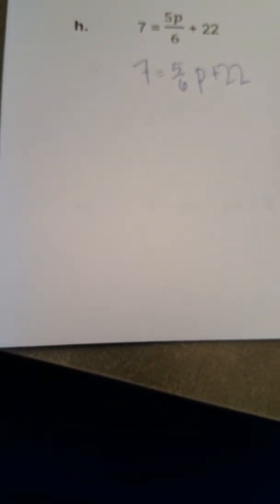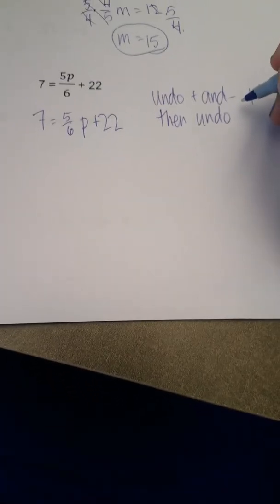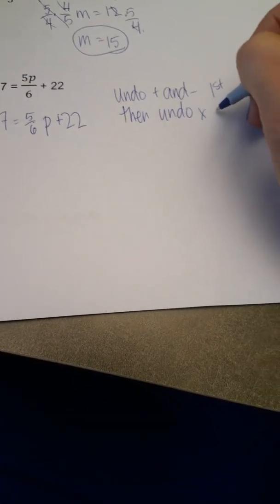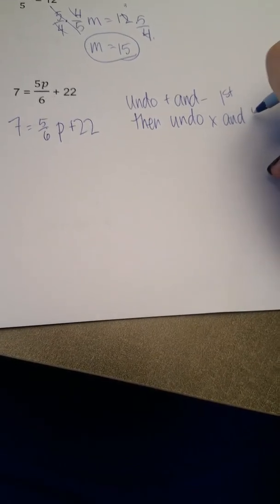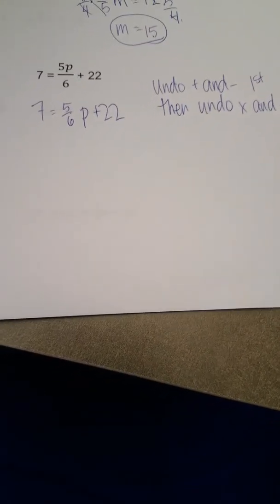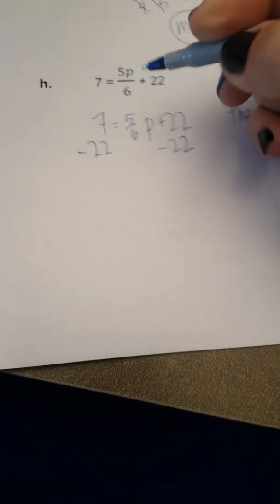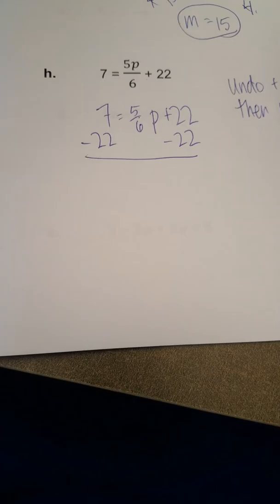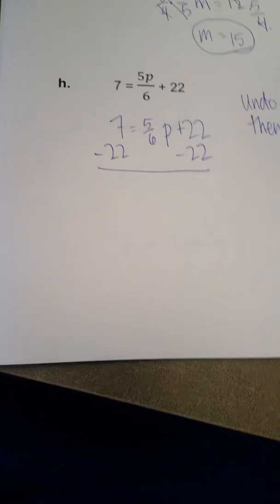Whoops! Then, undo multiplication and division. So I would like to move this 22 to the other side, and the way that I'm going to do that is by subtracting 22 from both sides of the equation. So on the left, 7 minus 22 is negative 15, is equal to 5 sixths p, and the 22s cancel out.